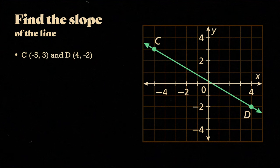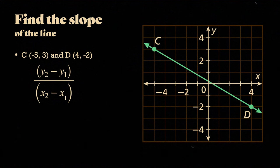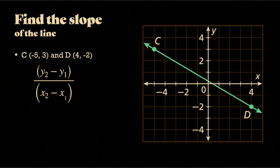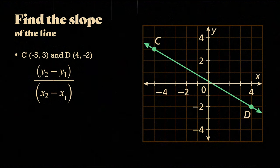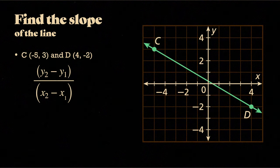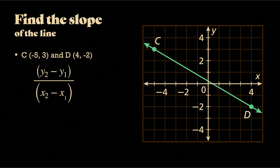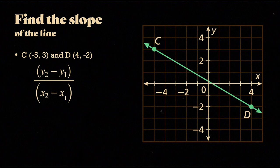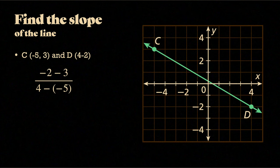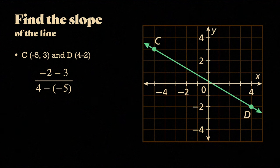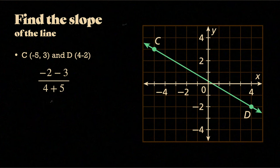So in this case, c is at negative 5, 3, and d is at 4, negative 2. So remember, our formula is y2 minus y1 over x2 minus x1. So in this case, the y value in point d is negative 2, and the y value in point c is 3. So that's negative 2 minus 3. And then the x value in point d is 4, and the x value in point c is negative 5. So we end up getting negative 2 minus 3, and 4 minus negative 5, which I'm going to rewrite as 4 plus 5.